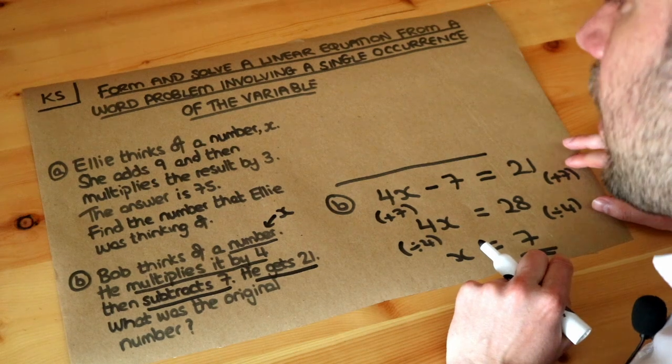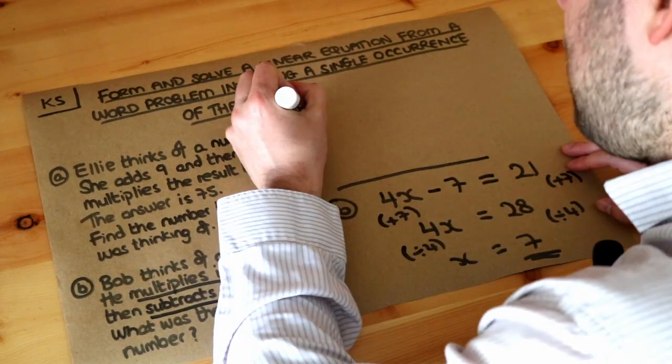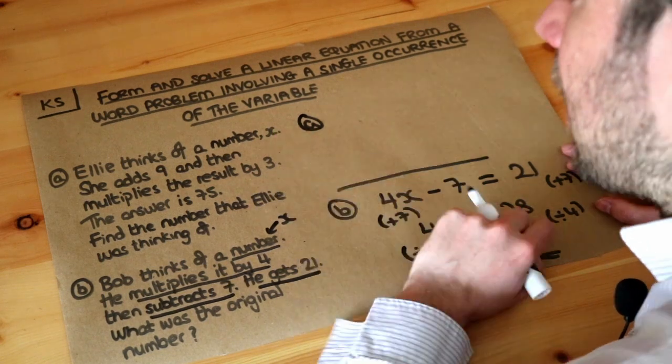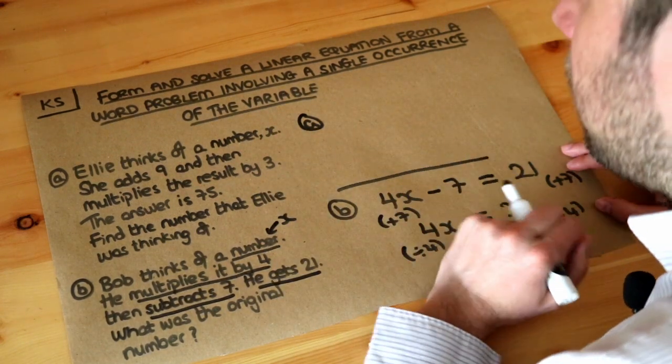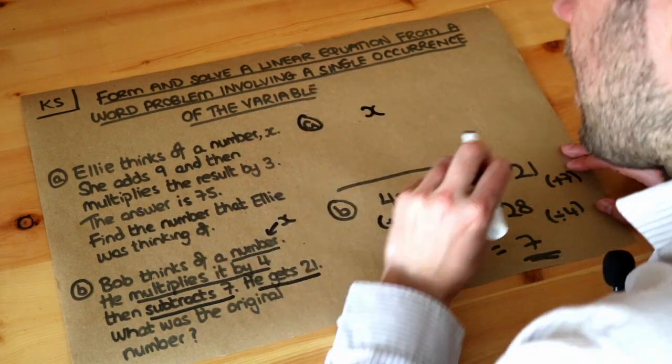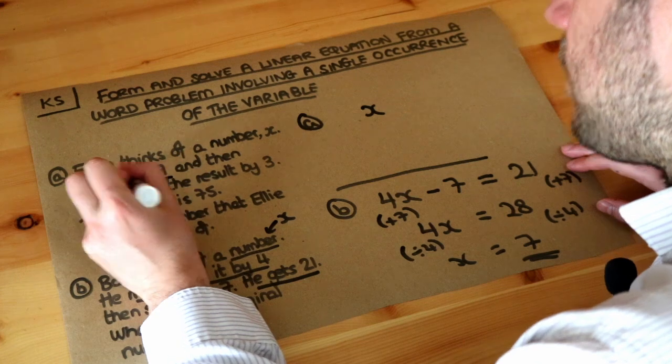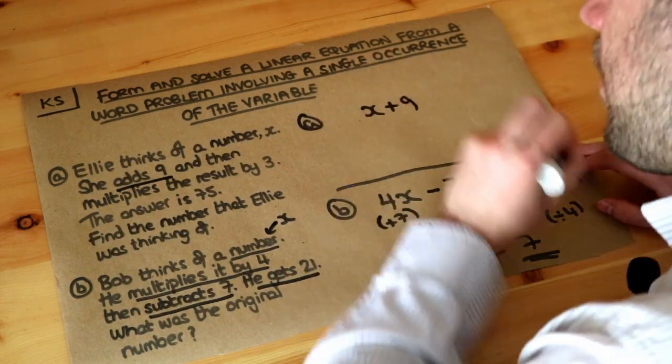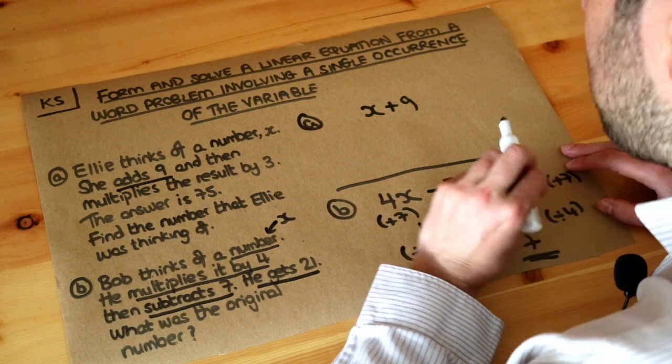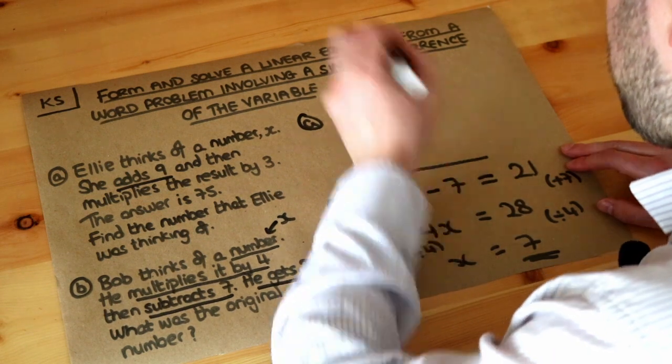Now let's do the first problem. Ellie thinks of a number x. This time you're given that the number is x rather than having to introduce a variable yourself. She adds 9, so you start with x and add 9. Then she multiplies the result by